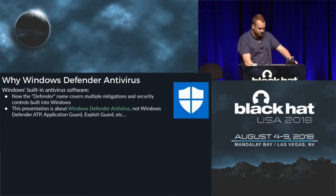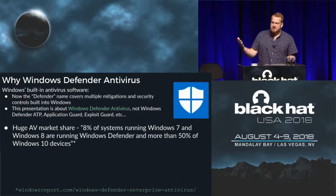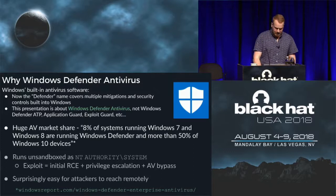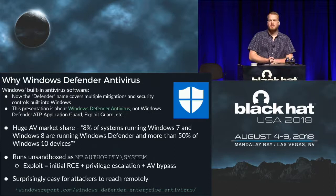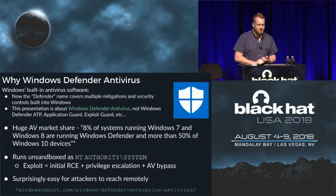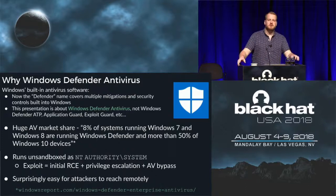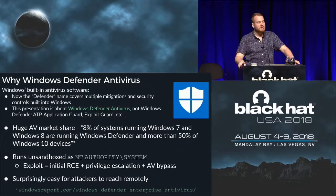Defender has a huge market share in the AV industry — 8% of Windows 7 systems and more than 50% of Windows 10 devices, because Microsoft turned on Defender by default when you install Windows 10. Defender also runs unsandboxed as NT authority system, meaning that if you have an exploit for a vulnerability inside Defender, you'll get initial remote code execution, a privilege escalation up to system, and an AV bypass because you're running inside the AV. It's also surprisingly easy for attackers to reach remotely.